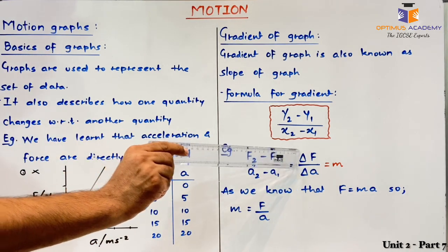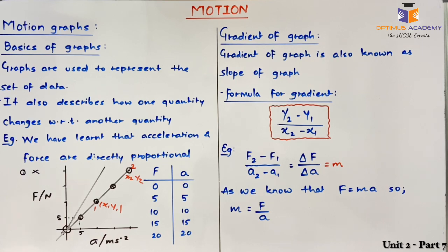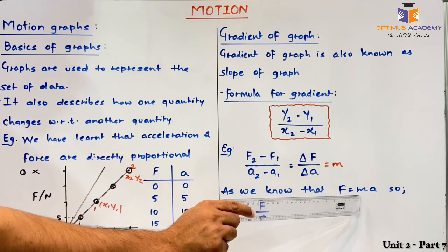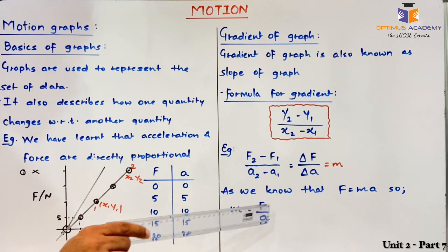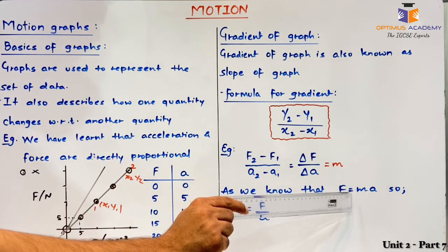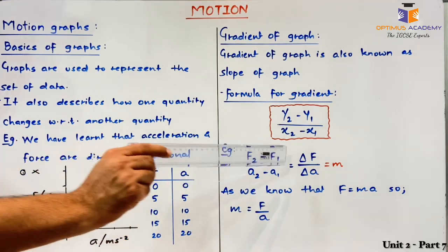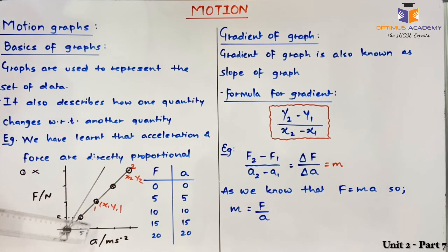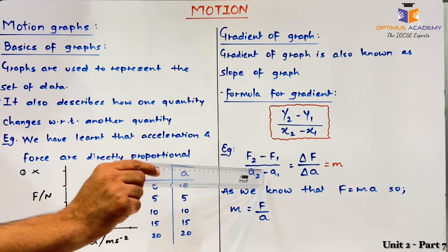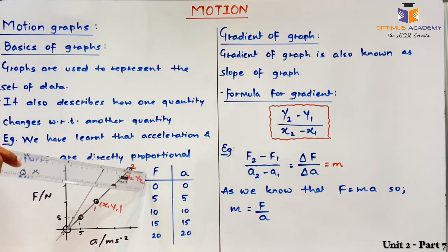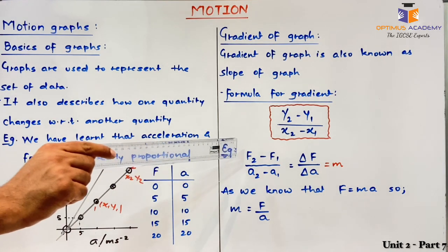We know that the formula for force is F = ma, which means m = F / a, that is, force divided by acceleration. This is exactly what we calculated as the gradient of this graph — ΔF / Δa. So the gradient of this force-acceleration graph is equal to the mass of the object. This shows that the gradient of a graph can lead you to a physical quantity derived from the formula relating the two plotted quantities.